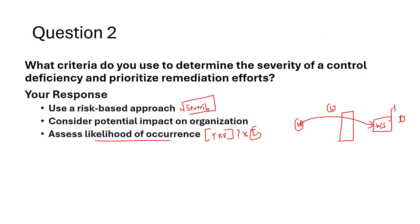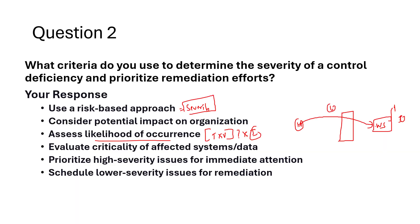When we see a list of many control deficiencies, we need to prioritize. I analyze the likelihood of occurrence and the criticality of the affected system or data. For instance, a deficiency that could lead to financial misstatement or a data breach would be rated higher in severity compared to a minor procedural lapse. In one case I found that critical financial systems lacked proper access controls, posing a high risk for fraud, so that issue was prioritized for immediate remediation.